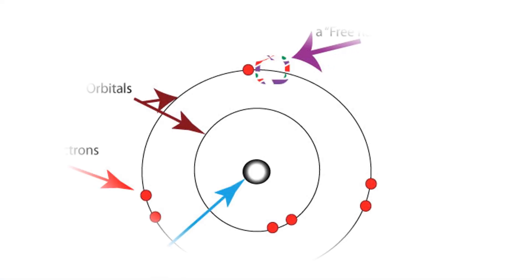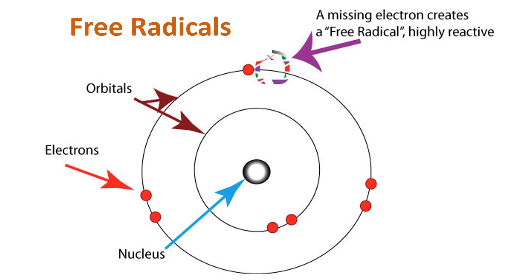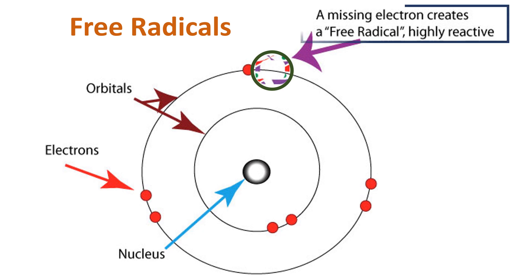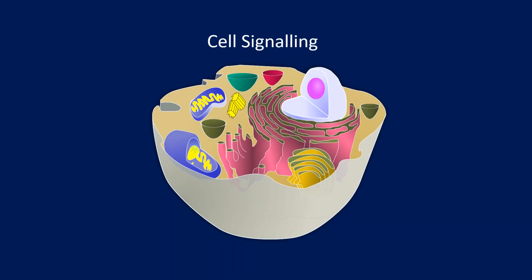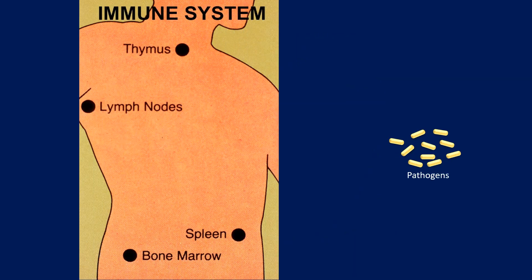Free radicals, also known as reactive oxygen species, are atoms or groups of atoms with an unpaired number of electrons. Free radicals are chemically unstable and highly reactive, and are formed through a number of mechanisms, including normal physiological processes, but also can result from external factors. In the optimal amount, free radicals play important roles in cell signaling and homeostasis, and a controlled amount of oxidative function is needed for health. For instance, oxidative processes are used by the immune system to kill invading pathogens.